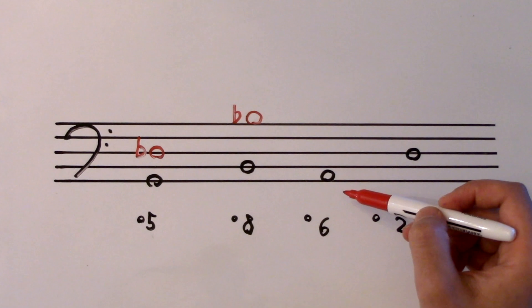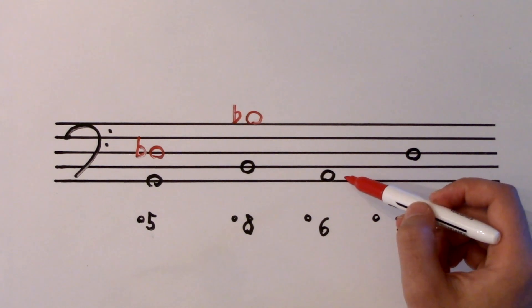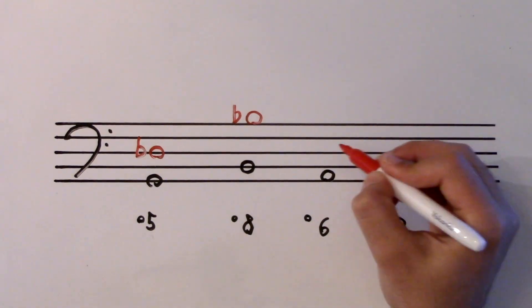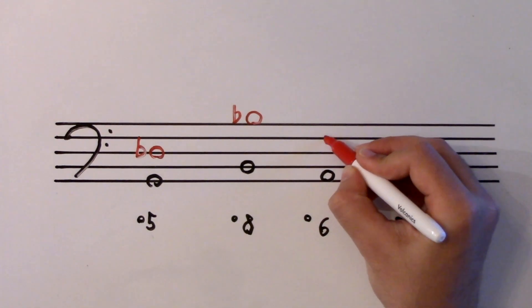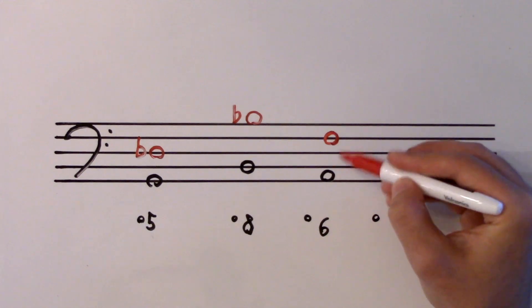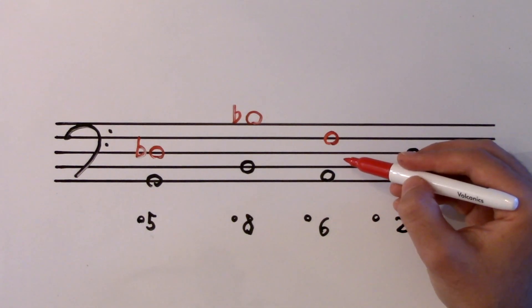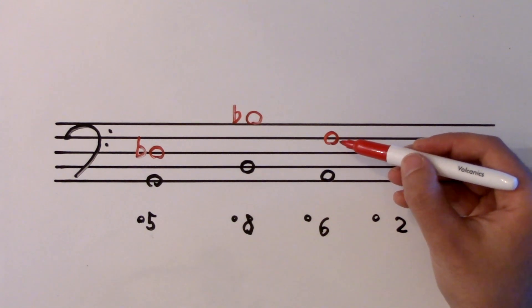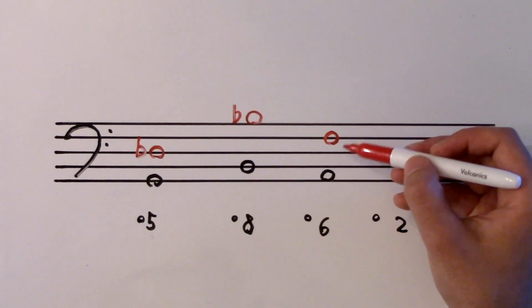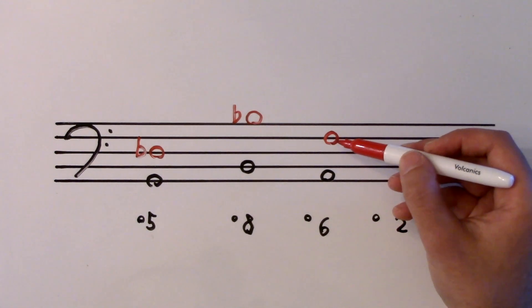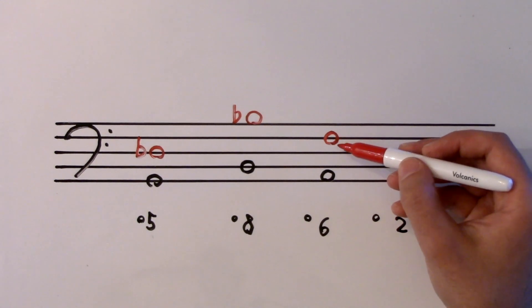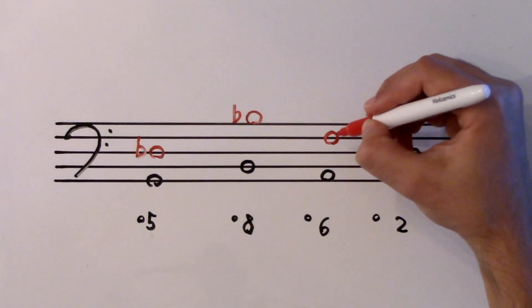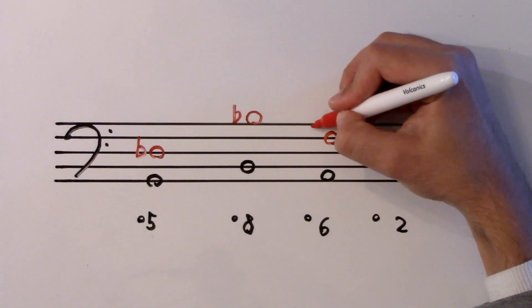A diminished sixth above A. Six steps above A is F. What is this right now? It's a minor sixth — F sharp is the sixth note of A major, so A to F sharp would be a major sixth. This is A to F natural, which is smaller — that's a minor sixth. Now I need to make it even smaller, and I can do that with a flat.